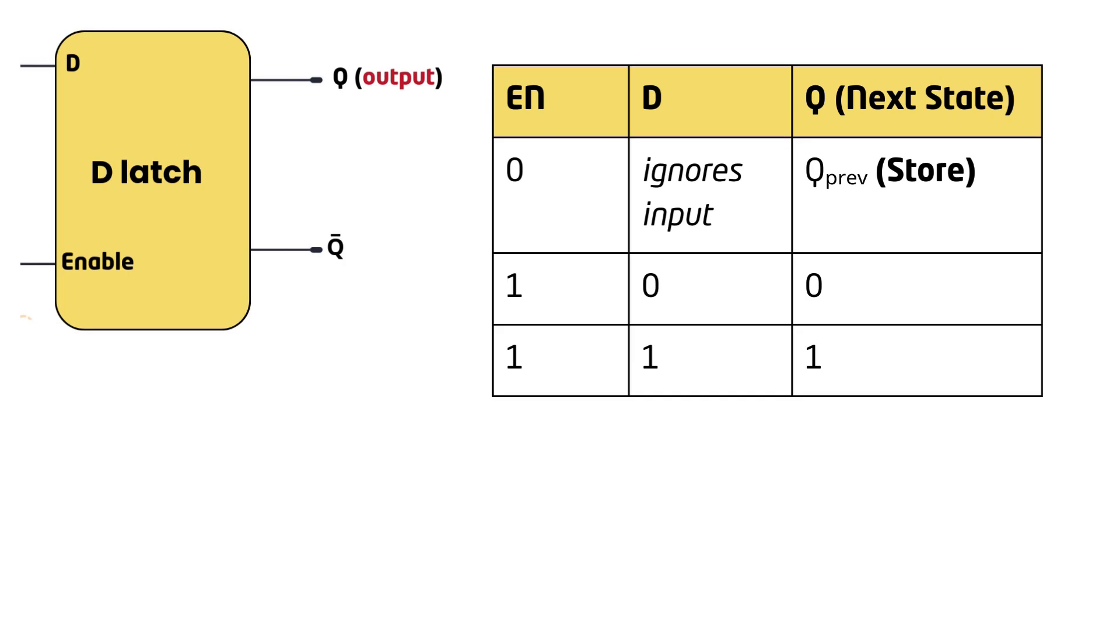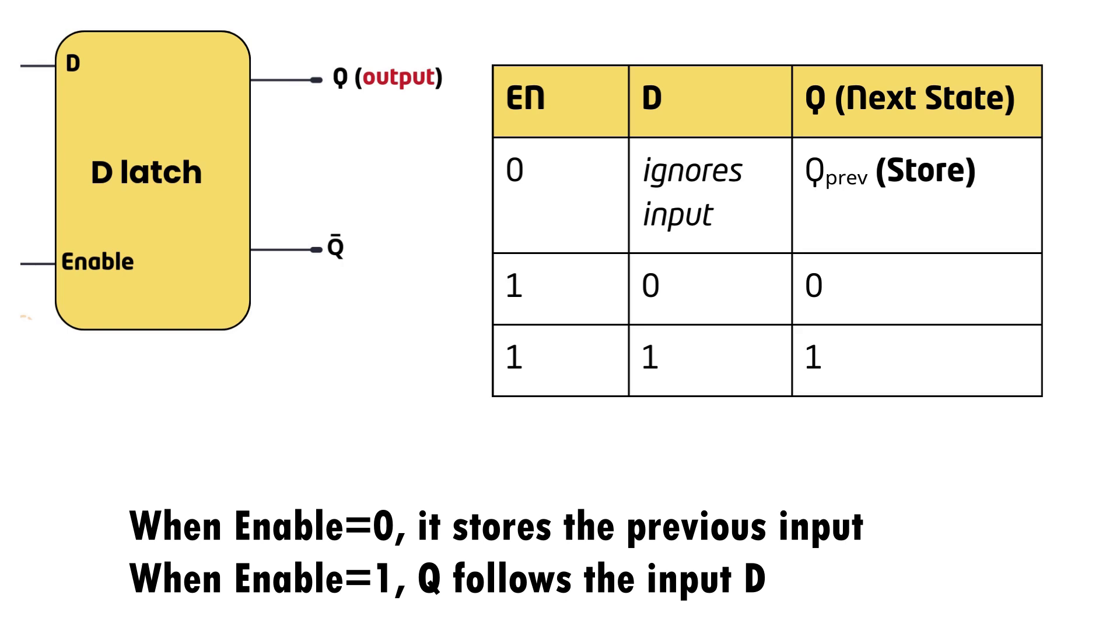When enable equals 1, the latch immediately follows the D input. If D is 1, Q becomes 1. If D is 0, Q becomes 0. This removes the ambiguity of the SR latch and ensures a well-defined behavior.